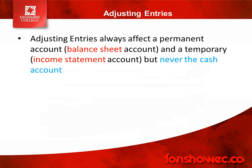Adjusting entries always affect a permanent account, meaning you're always going to be debiting or crediting a balance sheet account. You're also always going to affect a temporary account, which is an income statement account. For example, with prepaid insurance, we would debit insurance expense — the temporary account — and credit prepaid insurance, the permanent balance sheet account. One key thing: adjusting entries never affect the cash account. If we have to hit the cash account, that's a cash transaction, not an adjustment.